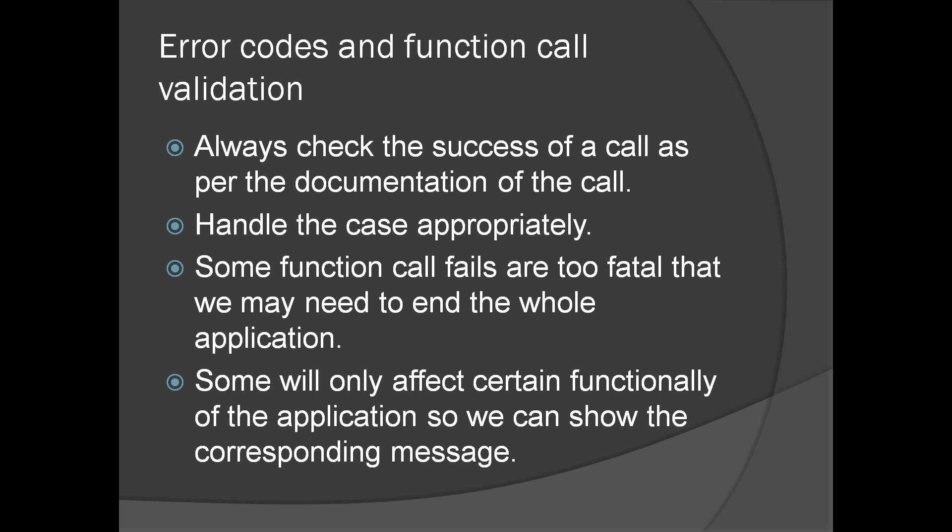Error codes and function call validation: In C, depending on the documentation of the function, always check the success of the call. Most C functions return error codes. Most libraries test that. Some libraries create exceptions, which we are not going to discuss. Most C libraries return error codes - for example, Win32 API, Windows Kernel Mode APIs. Depending on the return value of the function, we have to handle that case properly. We have to look at the documentation of the function to understand what it returns and what it means.